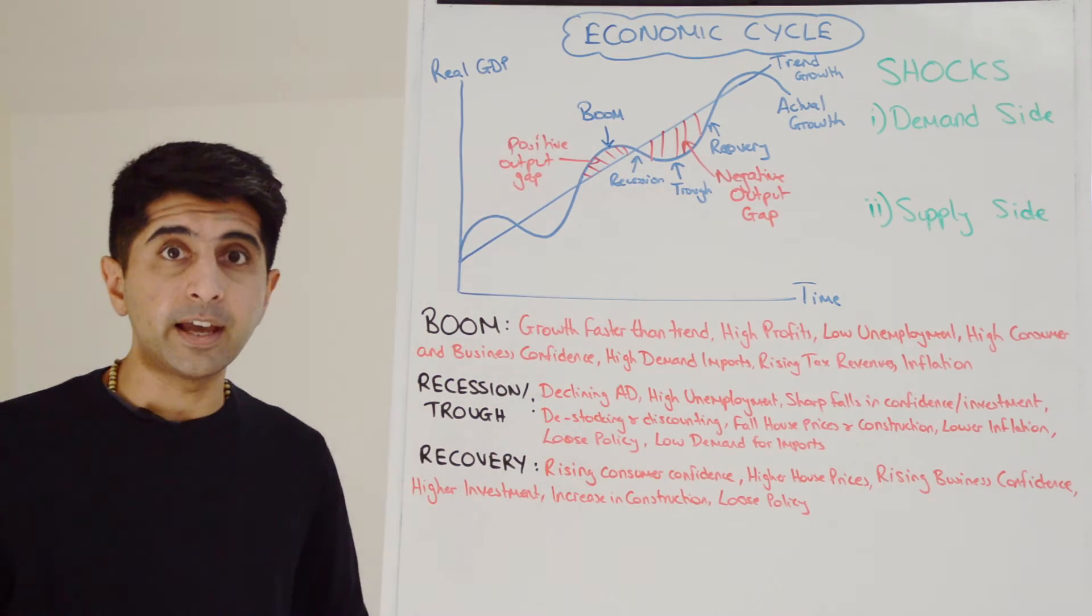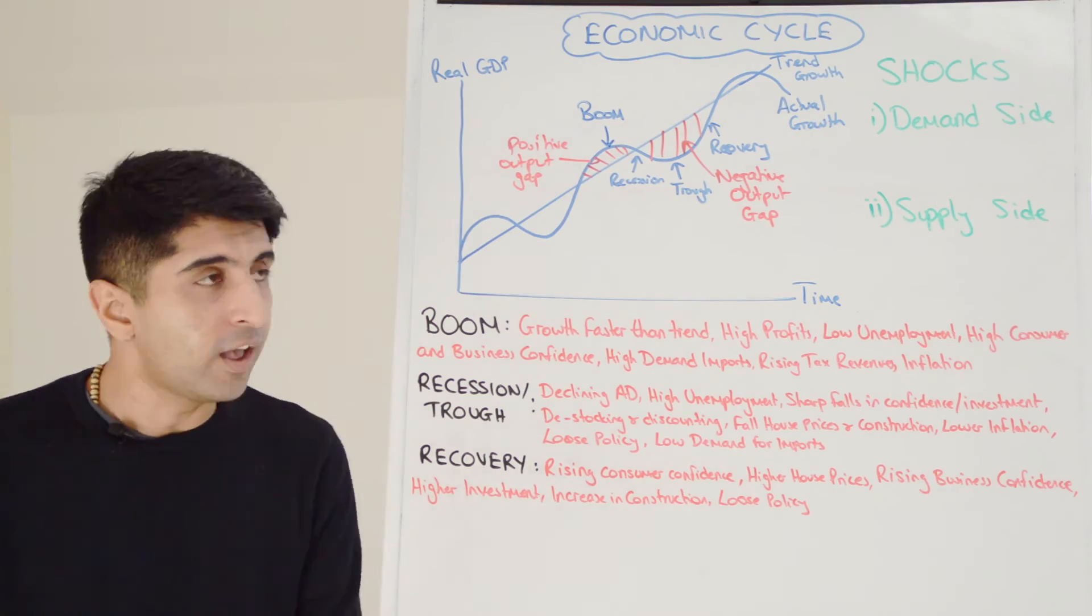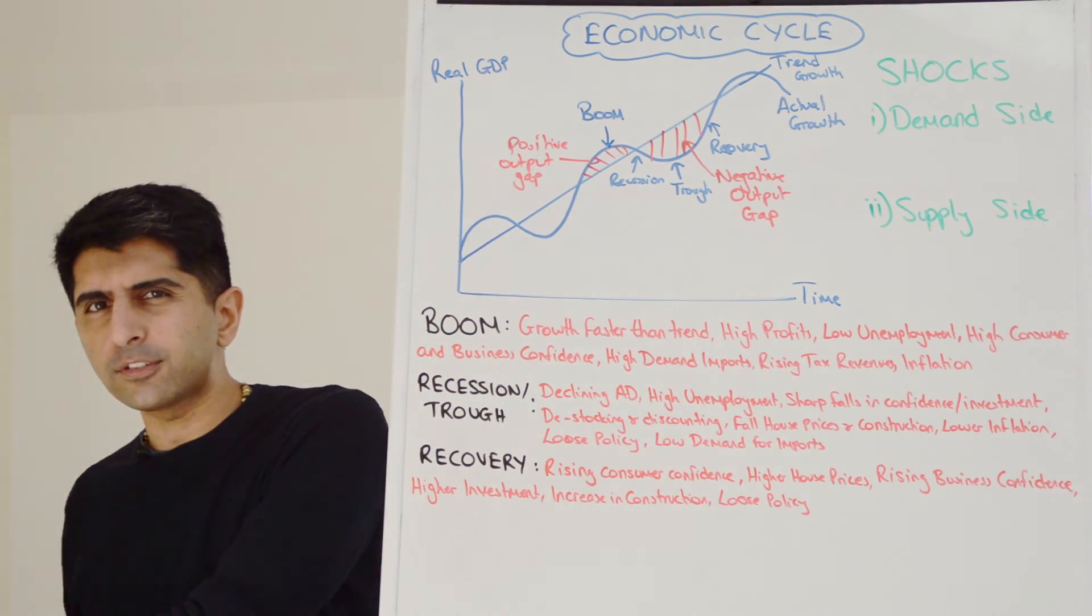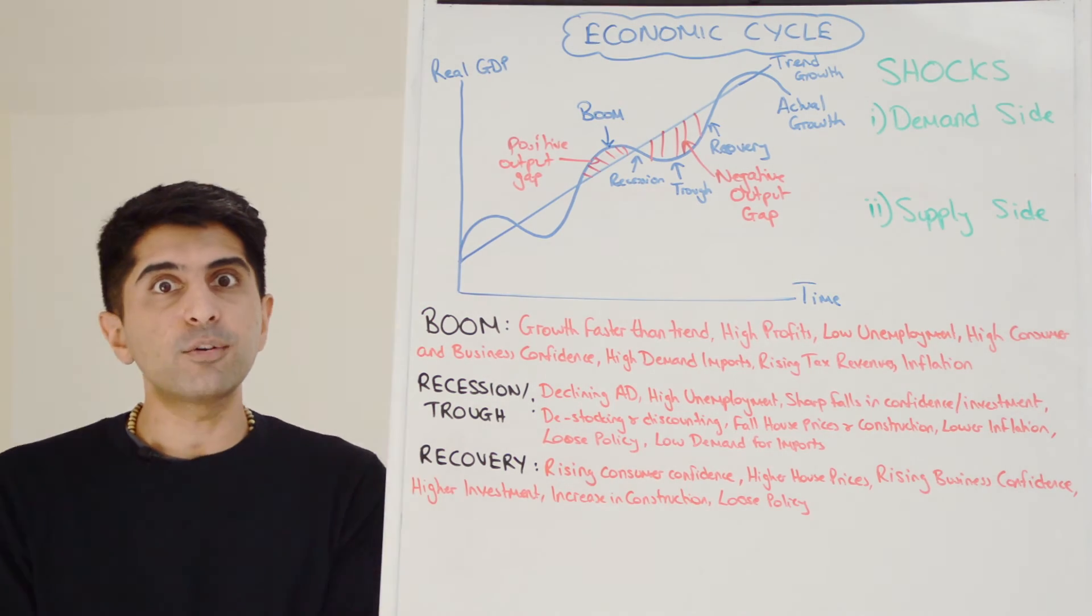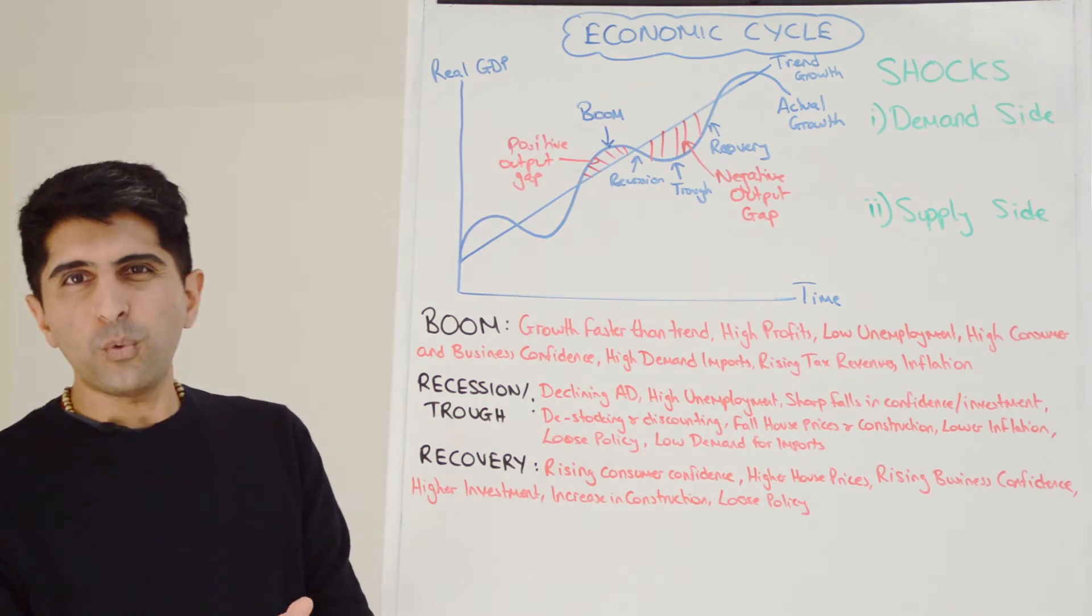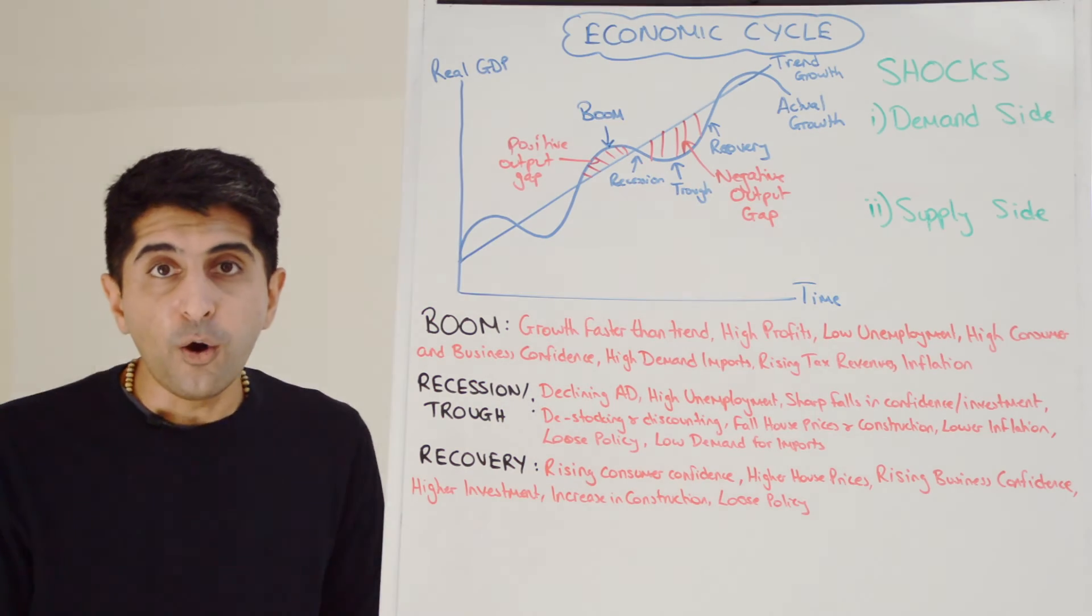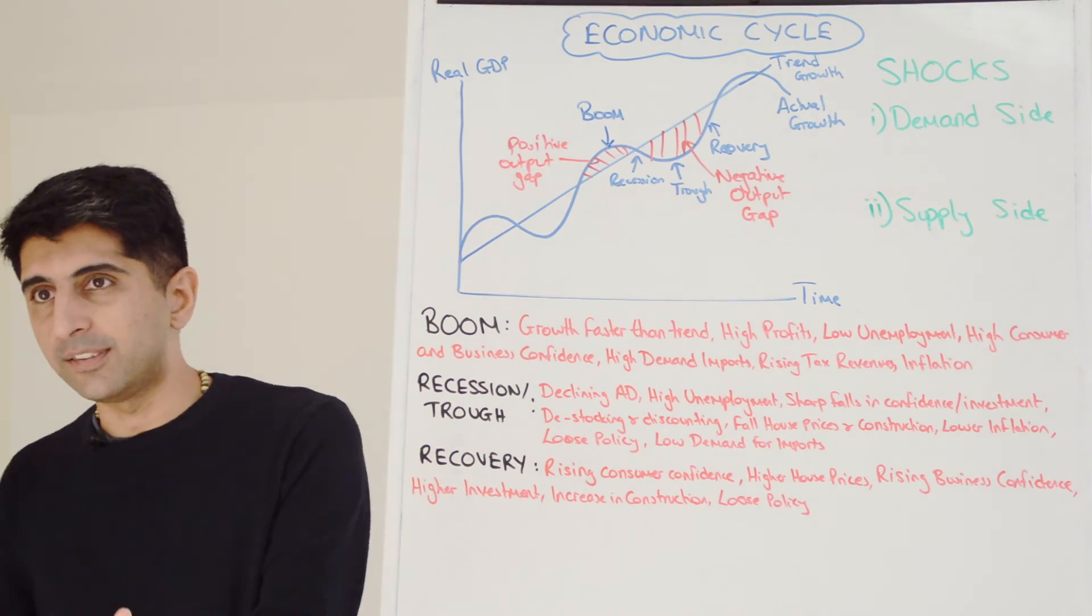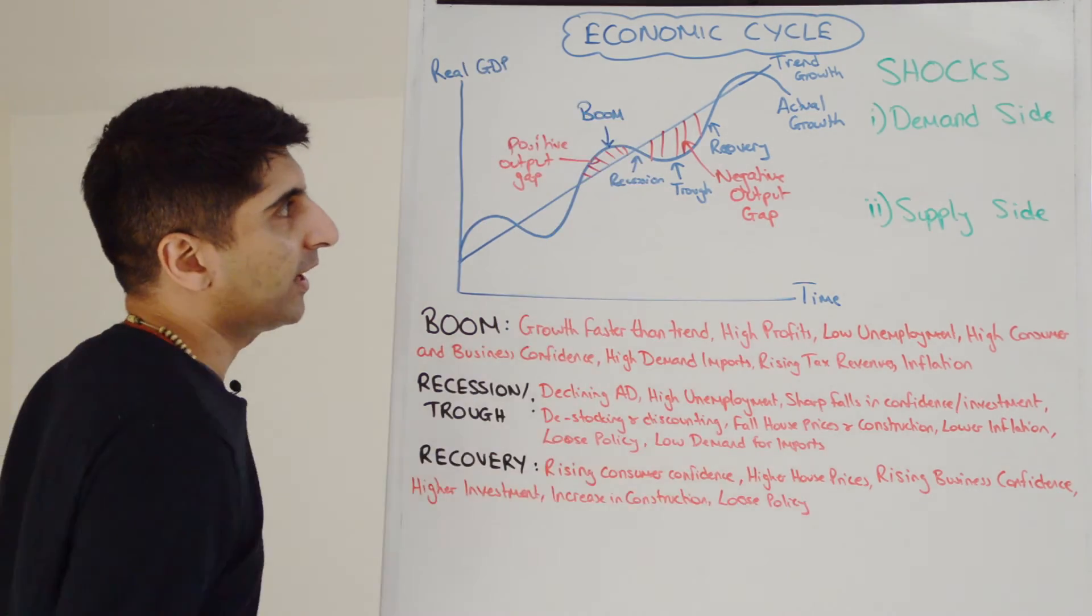But also we can have shocks on the supply side. Maybe shocks that affect LRAS, like natural disasters, like wars. But also we can see shocks to SRAS, factors that can shift SRAS left that people could not predict. For example, a sudden increase in the price of raw materials. For example, a sudden increase in wages. For example, a sudden increase in business taxes like VAT. Or for example, a sudden weakening of the exchange rate, which makes imports of raw materials more expensive. Those kind of factors can shock the economy and drive us into a recession.